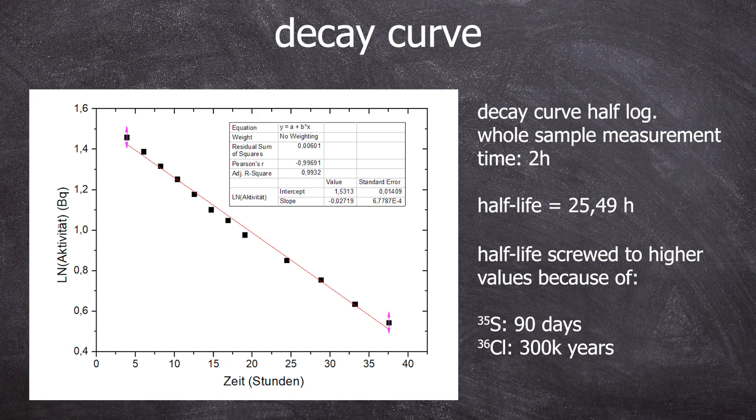That's a bit higher than 14 hours. Why? Of course, we have trace amounts of sulfur-35 and chlorine-36 in the sample. Both have compared to sodium-24 an absurdly long half-life. Traces of 300,000 years will skew the average way up.